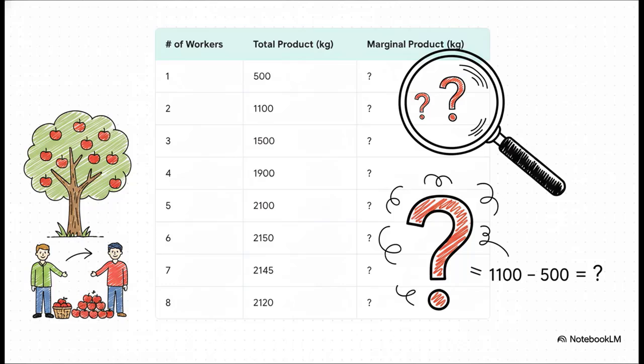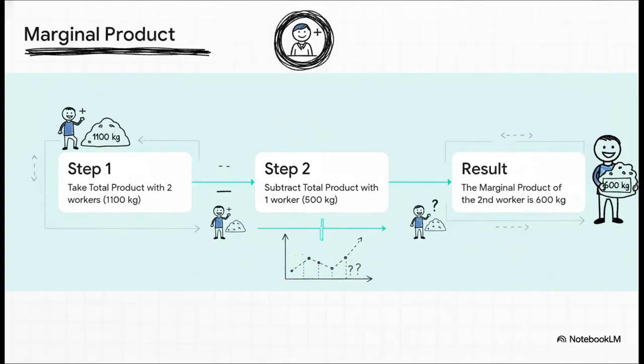Check out this data from our orchard. With one worker, we get 500 kilograms of apples. Not bad. Bring in a second worker and our total jumps up to 1100 kilograms. So obviously our total's going up. That's great. But here's the really important question: how much extra did that second worker just by themselves add to the pile? To figure that out, we calculate something called the marginal product. It sounds complicated, but it's not. It's just the extra little bit that each new person brings to the table. It's literally just simple subtraction.